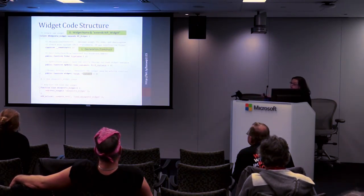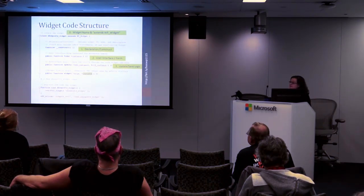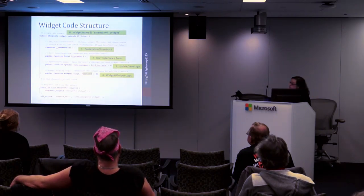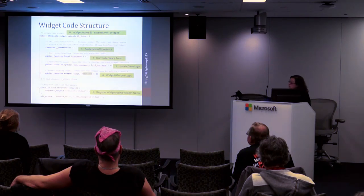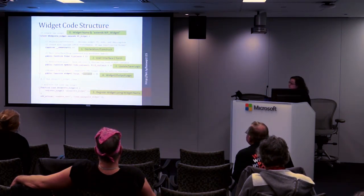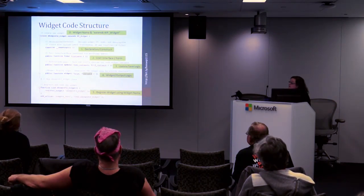We create this class structure which breaks down into the four pieces we talked about. At the top is our declaration construct, where we're extending wp_widget. Then our user interface form, aptly named function form. Then the update/save logic, aptly named update. And finally widget, which is our output. Then we close the class, and at the bottom we register the widget. There's an add_action that hooks into widget_init, which tells WordPress we have another widget that should be on the list.